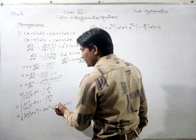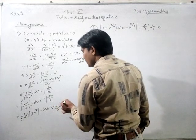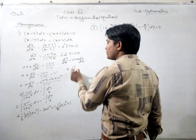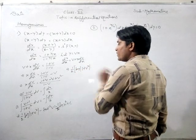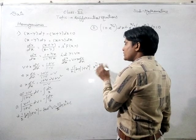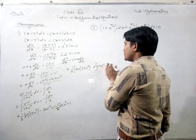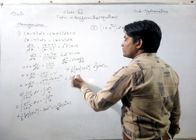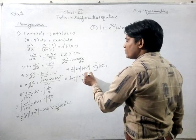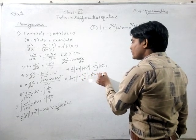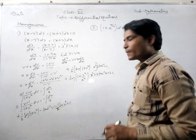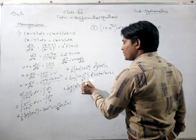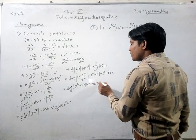So the result is: half log(1 plus v squared) minus tan inverse(v) equals minus log(x) plus c. Multiplying through by 2 and rearranging, log(1 plus v squared) times x squared plus 2 tan inverse(v) equals 2c. Substituting back v equals y/x and simplifying, x squared and x squared cancel, giving the final answer: log(x squared plus y squared) plus 2 tan inverse(y/x) equals 2c.